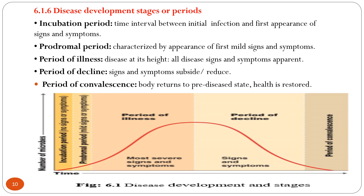Disease development stages: the first is the incubation period — the time interval between initial infection and the first appearance of signs and symptoms. The second is the prodromal period, characterized by the appearance of the first mild signs and symptoms. The third is the period of illness, where the disease is at its height and all signs and symptoms appear.